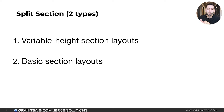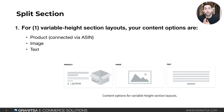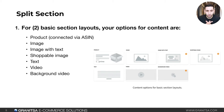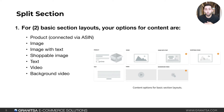There are two options: the variable height section layout and the basic section layout. For the variable height section layout, you have three basic content options. You can show your product, which you just add your ASIN and it automatically connects a product. You can add an image or you can add text. For basic section layouts, you have a lot more options: product, image, image with text, shoppable image, text, video, and background video, which auto plays and loops forever.